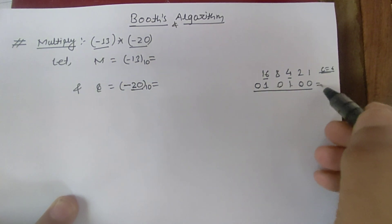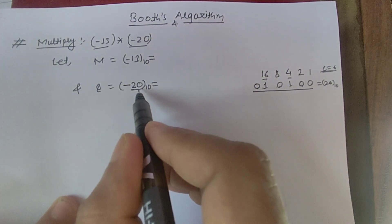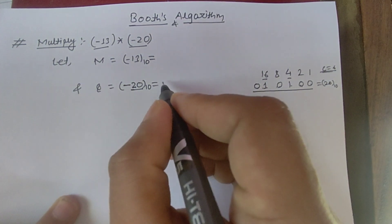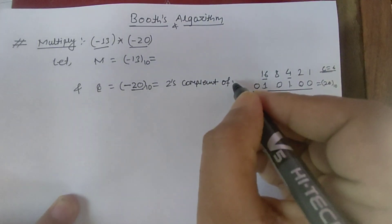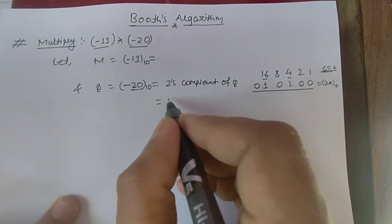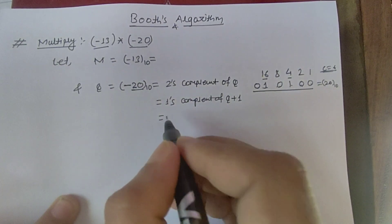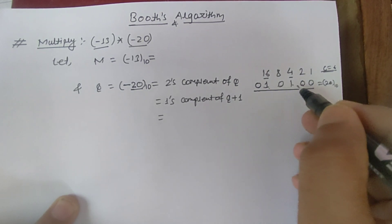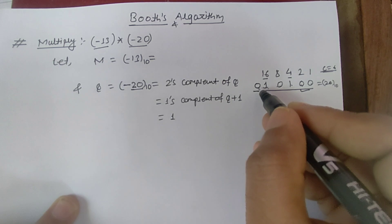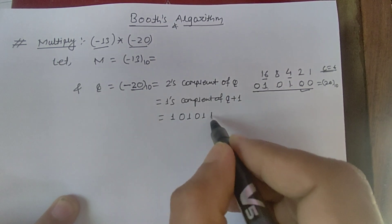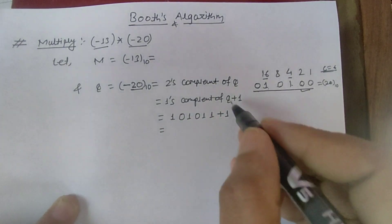This is the binary equivalent of 20, but we need minus 20. To convert to minus 20, we take the 2's complement of Q. The 2's complement equals the 1's complement plus 1. The value of 20 is 010100, and the 1's complement is obtained by inverting all digits: 0 becomes 1, 1 becomes 0, giving 101011.